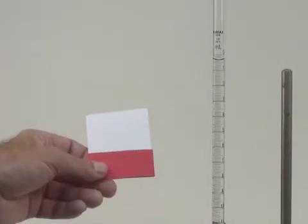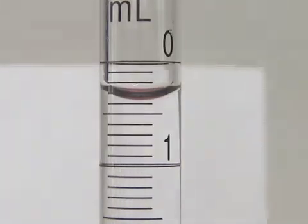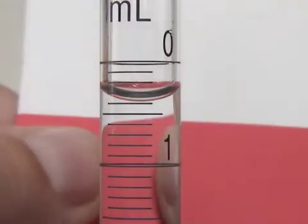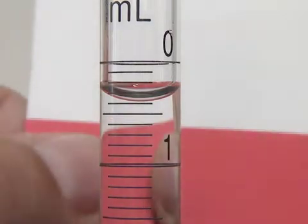We will read the meniscus with the aid of a card with a colored tape on it. Hold the card at about a 45-degree angle from the meniscus. This will reflect light from above through the meniscus. The colored tape should be just below the meniscus. This will turn parts of the meniscus the same color as the tape.